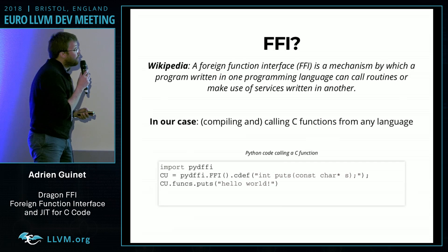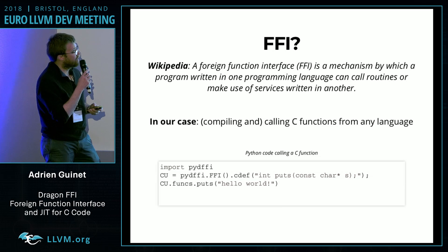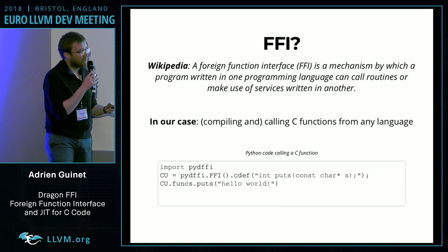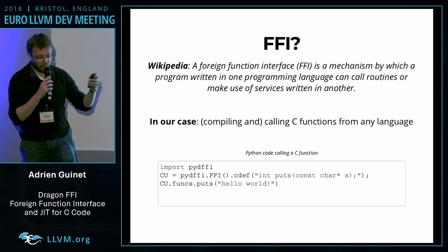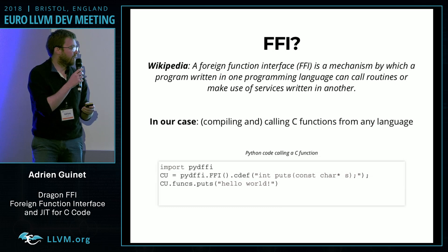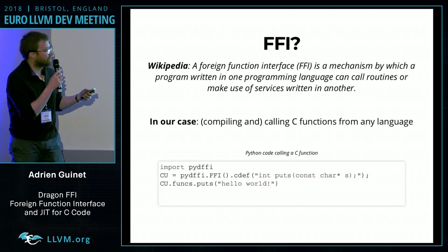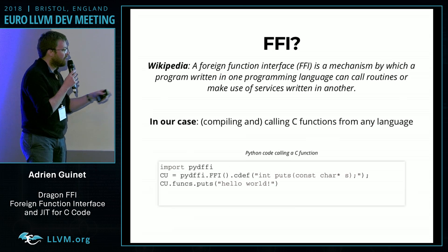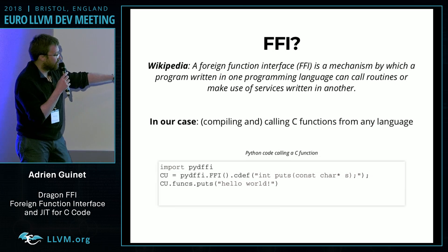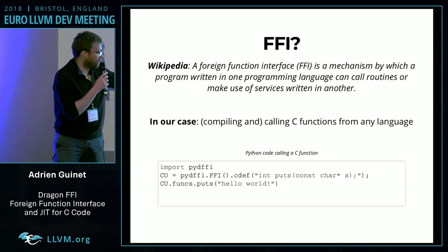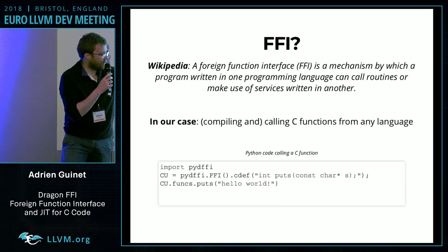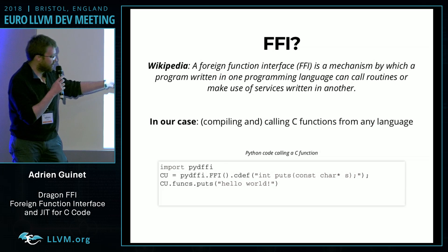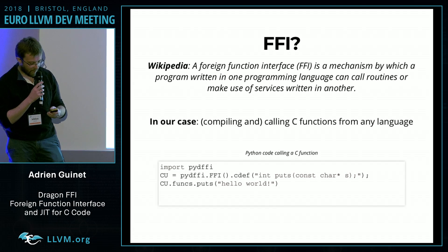So what's an FFI? It's a foreign function interface. The idea is to be able to call any function from any other language. In our case, what we want to do is compile and call C functions from any language. Here is an example from Python — I defined the PuTest function, and then I'm able to call it directly from Python.